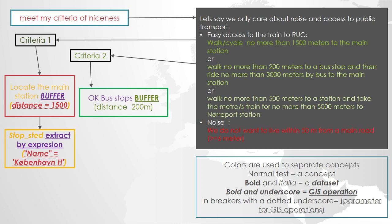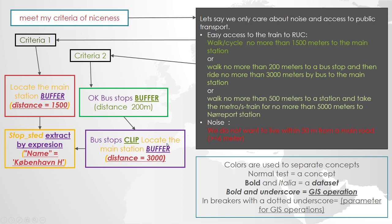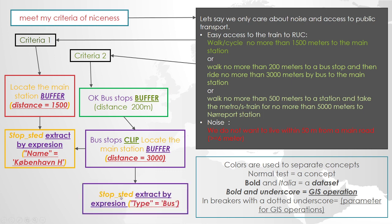For criteria two: you live somewhere, walk a maximum of 200 meters to a bus stop, and that bus stop must not be further away than three kilometers from the main station. So let's call the bus stops within that three-kilometer radius 'okay bus stops.' We need to find all bus stops first, then clip them with a three-kilometer buffer around the main station. We use the stops dataset again and extract by the type called 'bus.'